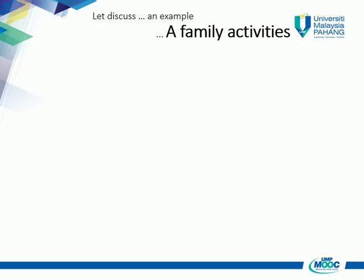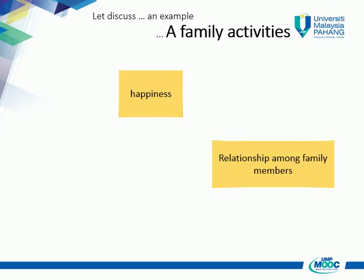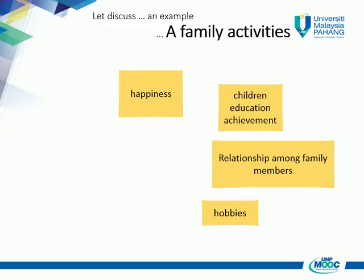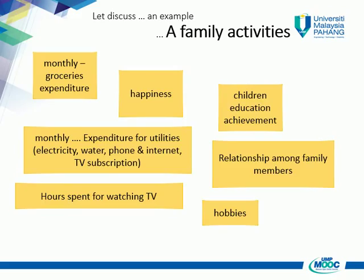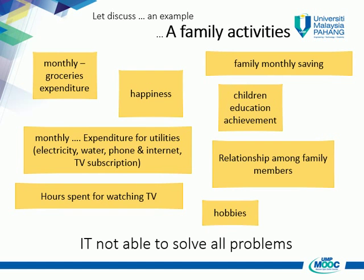Let's discuss by giving an example that relates to family daily activities. It starts with relationships among family members, involving parents and children. The most important element is happiness among family members. The main responsibility of parents is their child's education achievement — whether excellent, average, or facing problems. Parents also must consider their children's hobbies, such as watching movies or cartoons on television — but how many hours do they spend watching? On the financial side, parents must plan expenditure for groceries, utilities, electricity, water, phone, internet subscription, and how much they save in a bank.